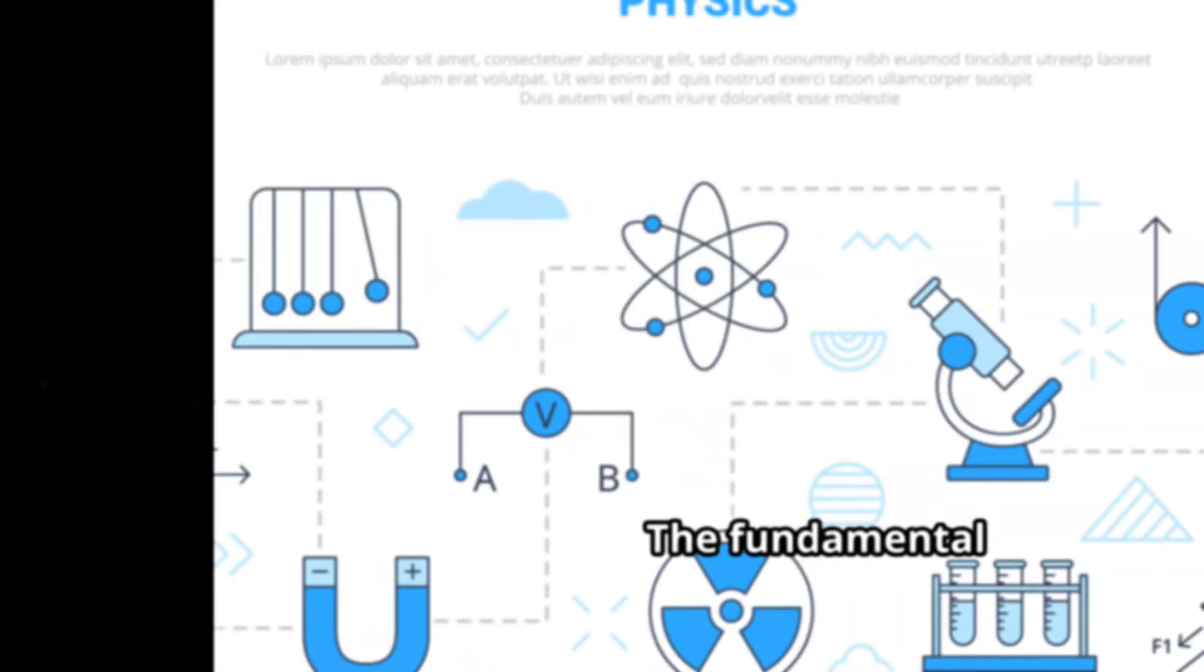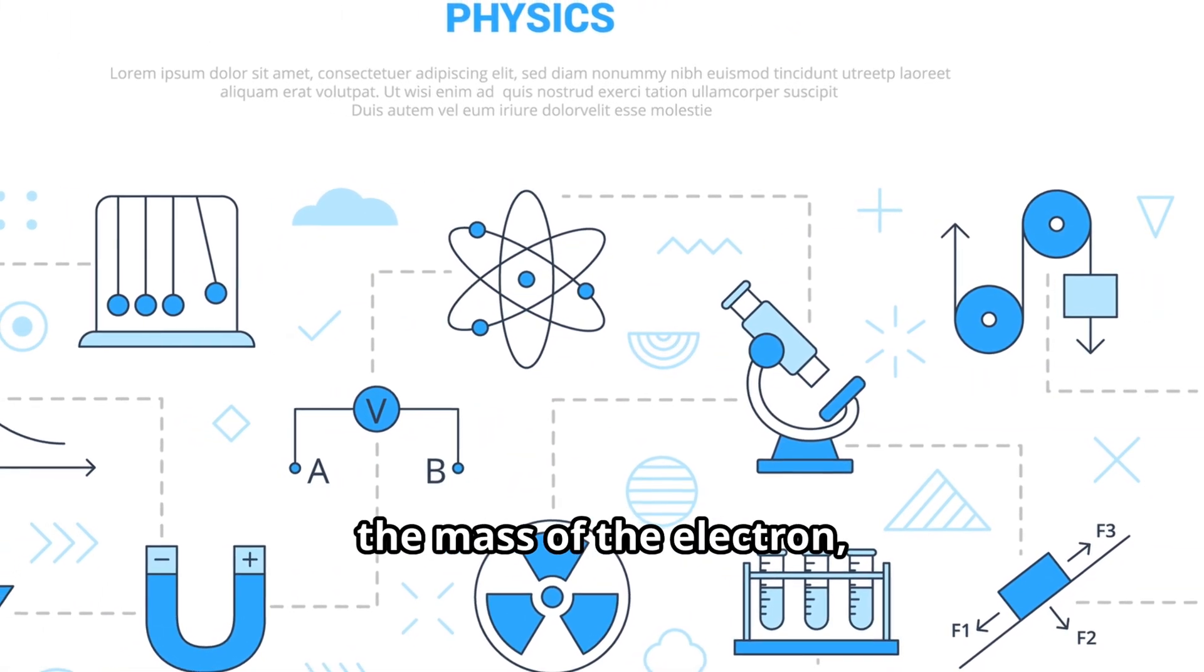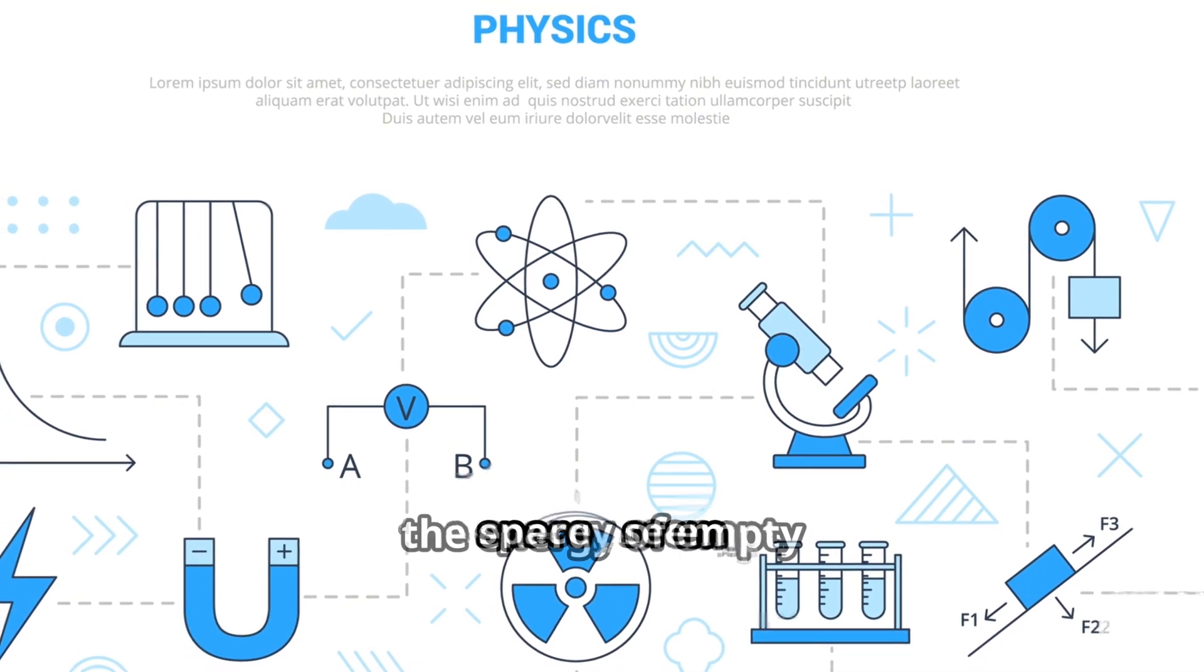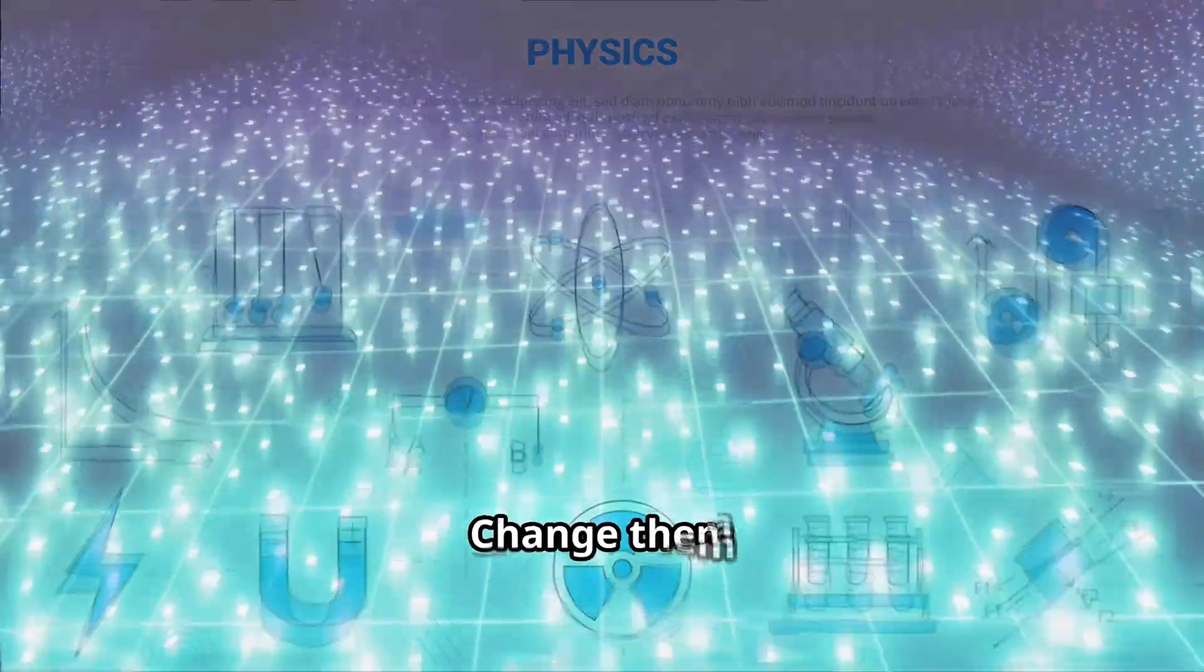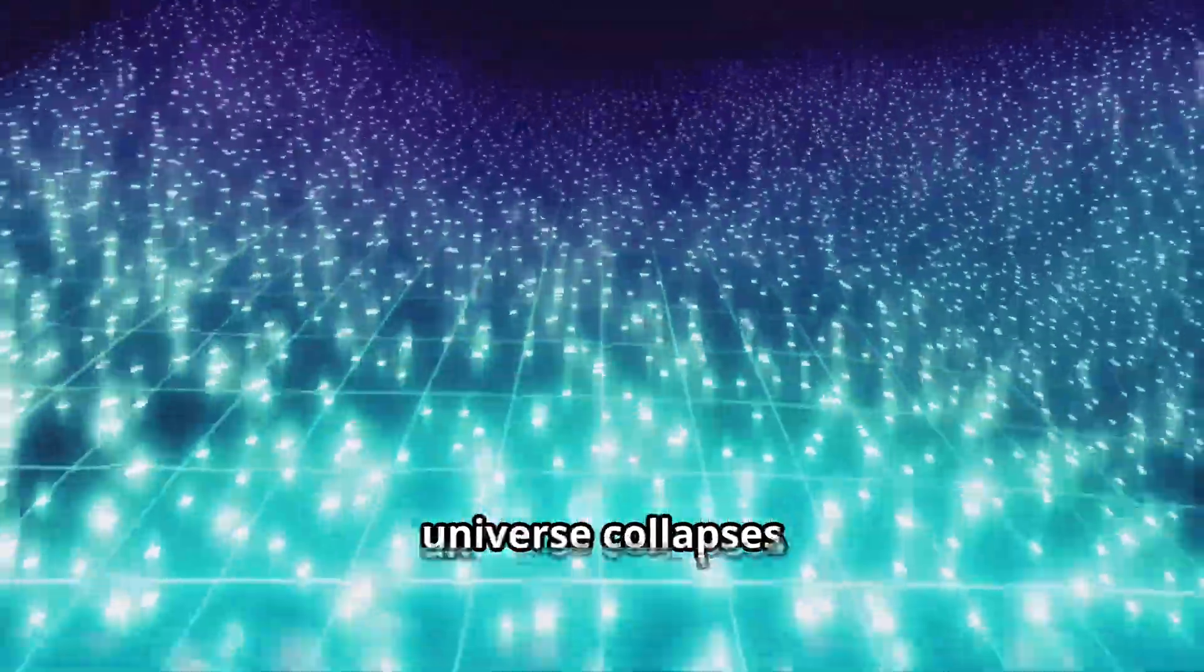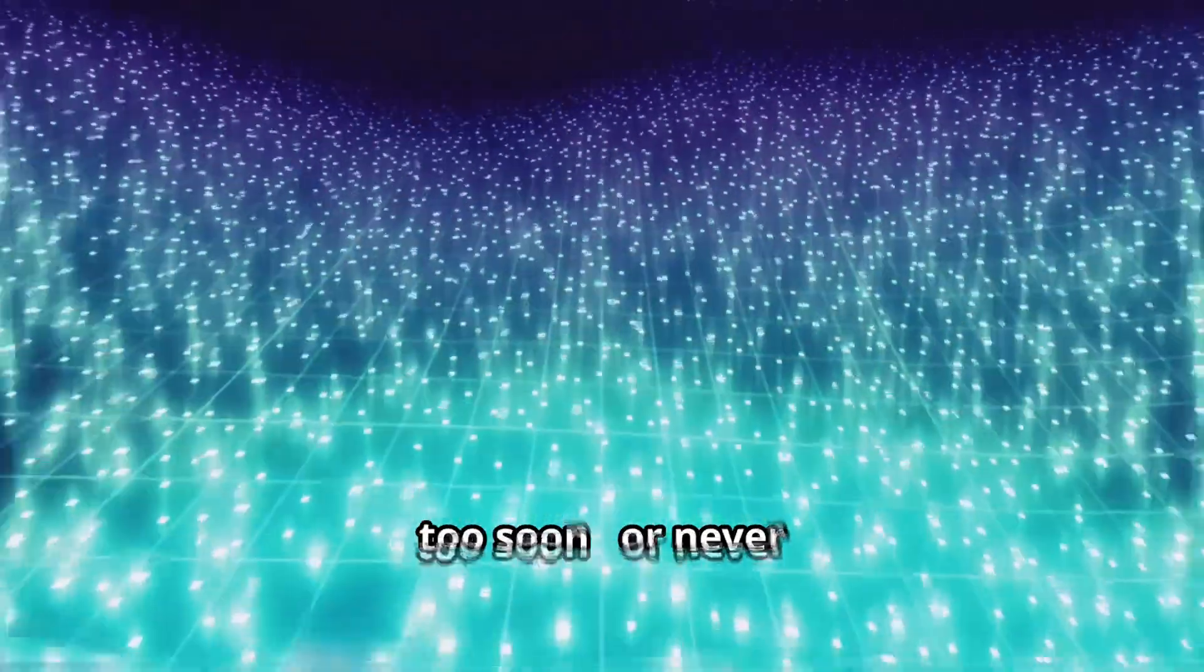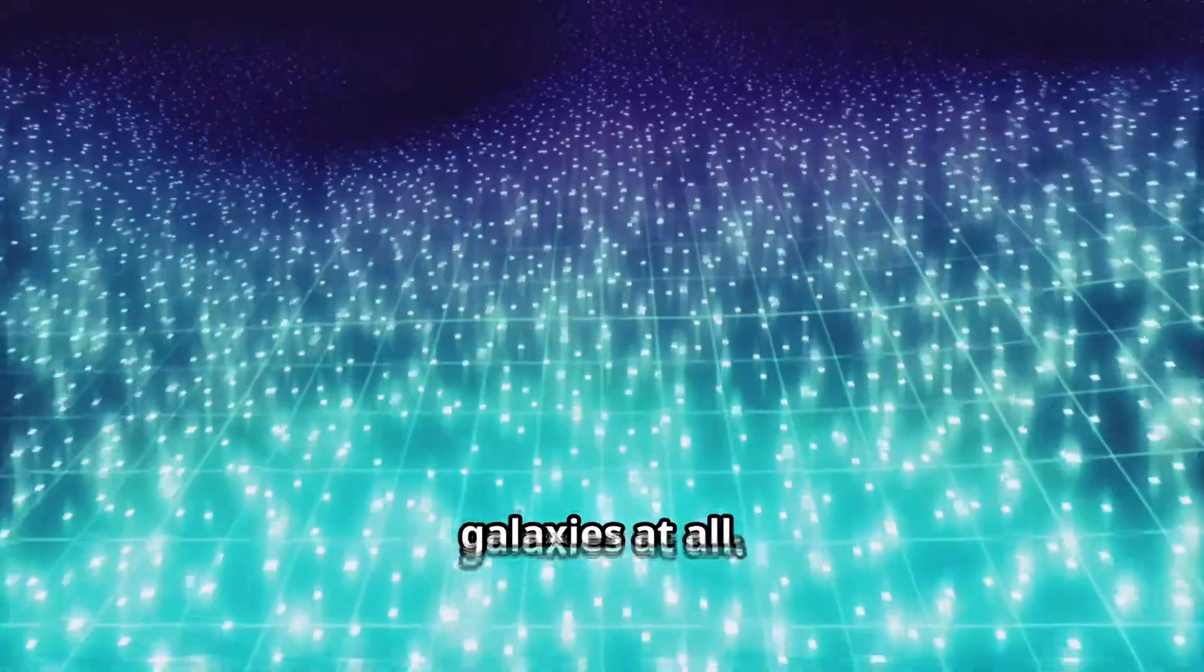The fundamental constants - the strength of gravity, the mass of the electron, the energy of empty space - seem exquisitely fine-tuned for life. Change them slightly, and the universe collapses too soon or never forms stars and galaxies at all.